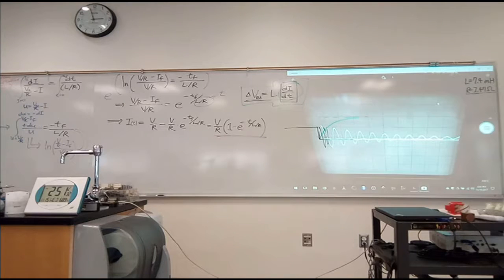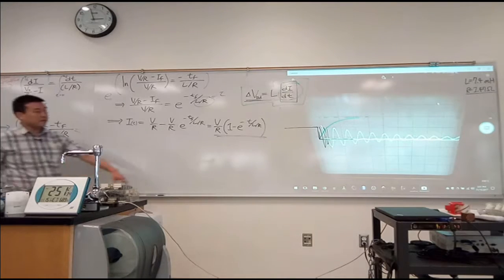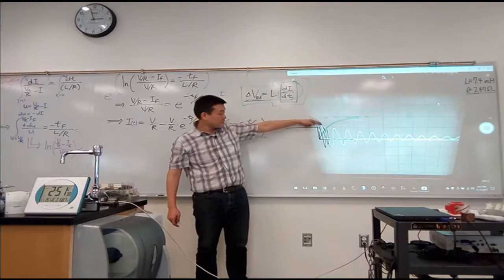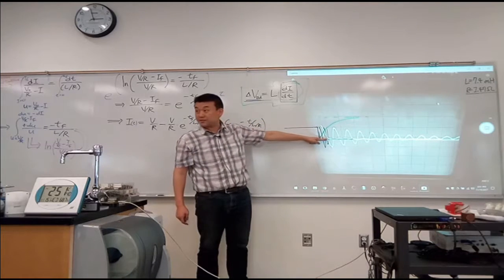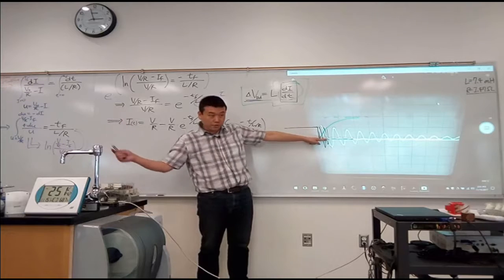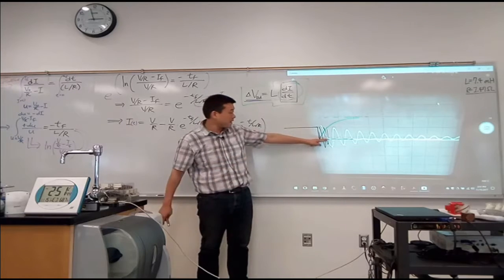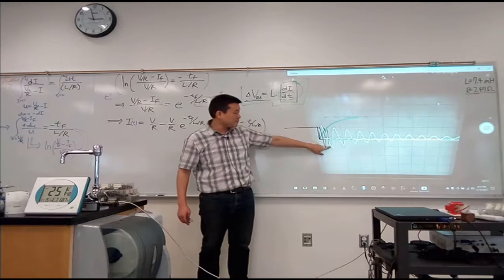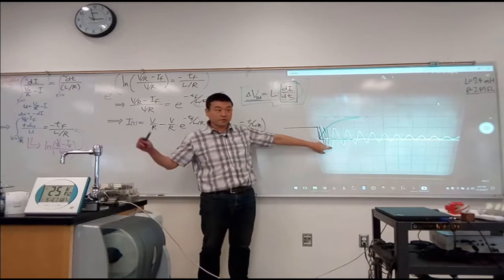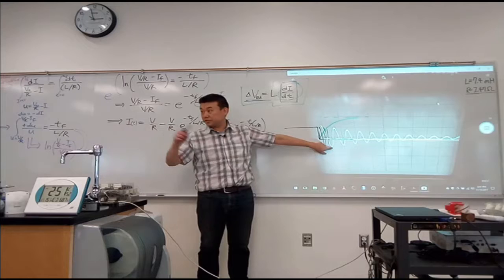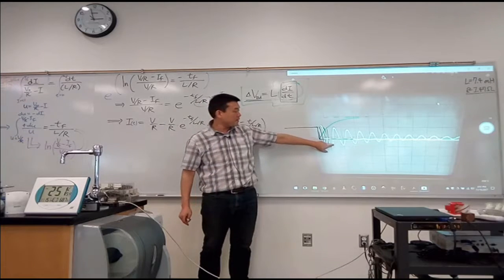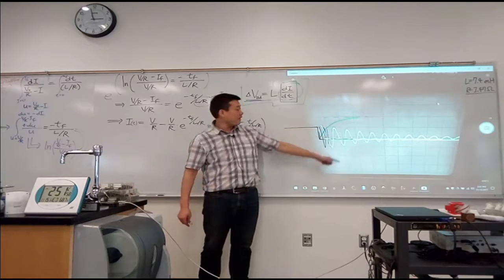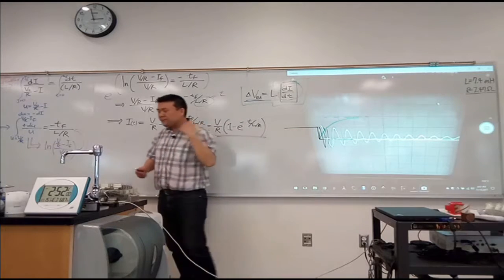All right, so you do start out with the maximum amount of charge on the capacitor. It discharges. But when it reaches zero, it doesn't stop because the current continues to flow through the resistor. It gets negatively charged. And then when it's maximally charged, the current flows back through the inductor again. And then when it completely discharges, it doesn't stop, keeps on going.